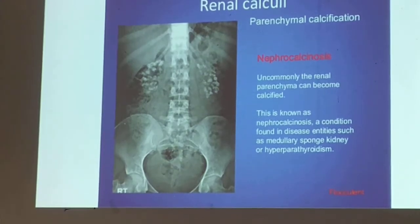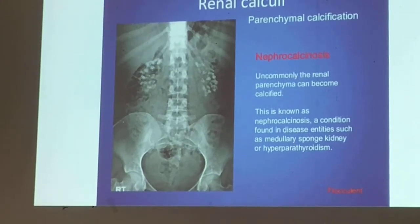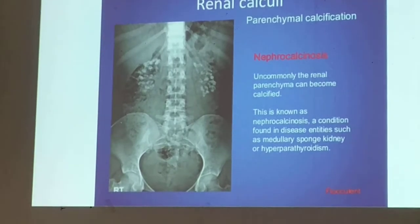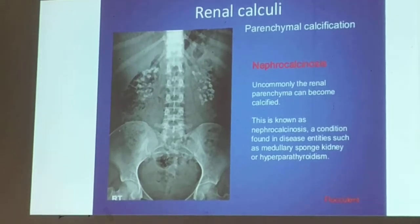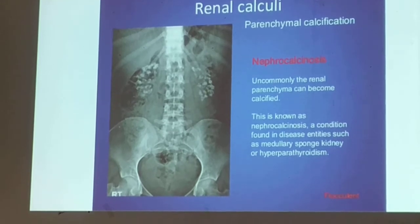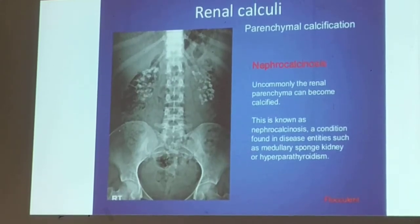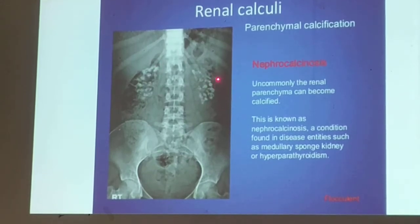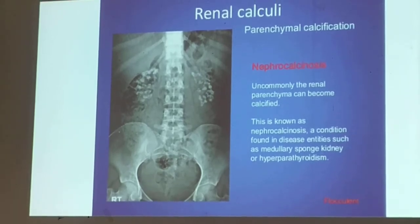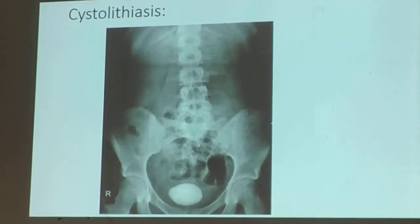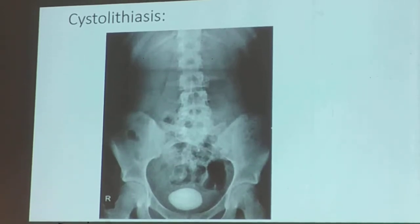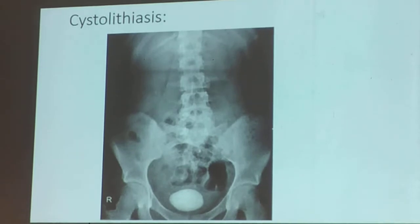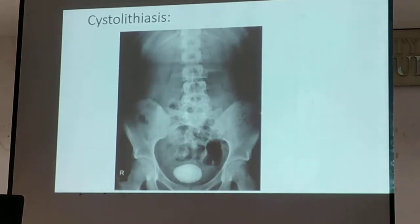This is your nephrocalcinosis. When you say nephrocalcinosis, the parenchyma — usually on the periphery — is calcified. It looks like multiple stones, but actually it's the parenchyma that is being calcified. This is a huge stone seen at the urinary bladder. This is not parenchyma; instead, this is a stone. So you call it cystolithiasis.